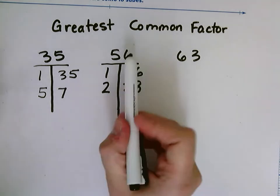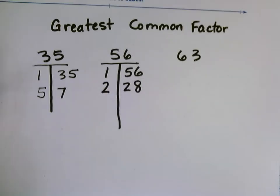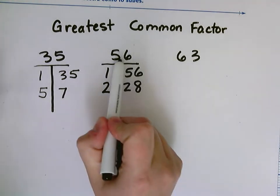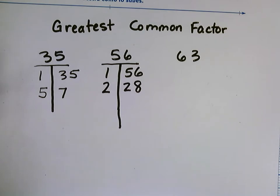3 is not a factor because 5 plus 6 is 11. And when you add the digits of the number that you're looking at and they're divisible by 3, then the number is divisible by 3. But 11 is not divisible by 3.